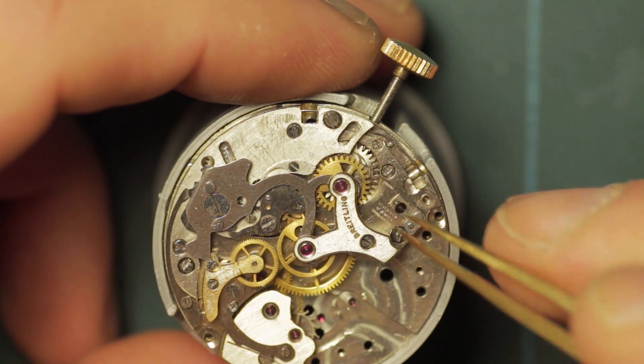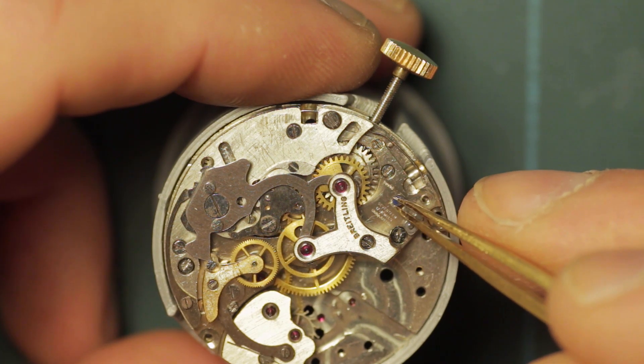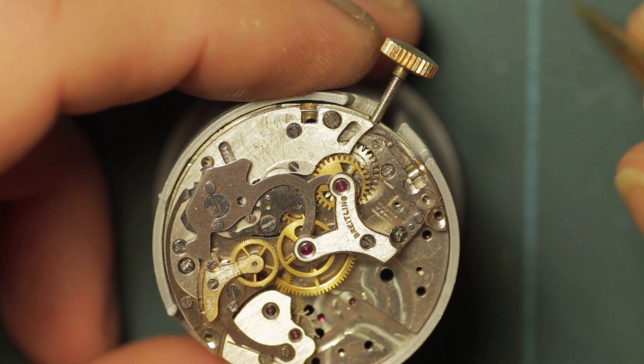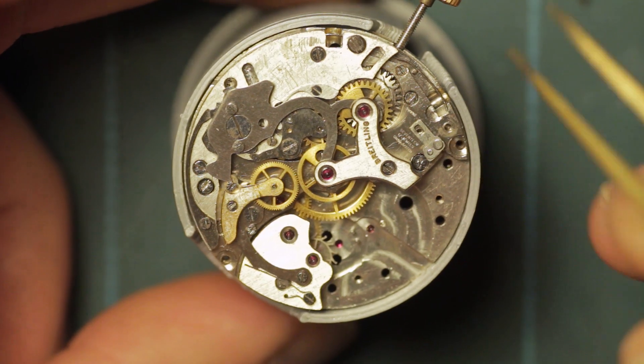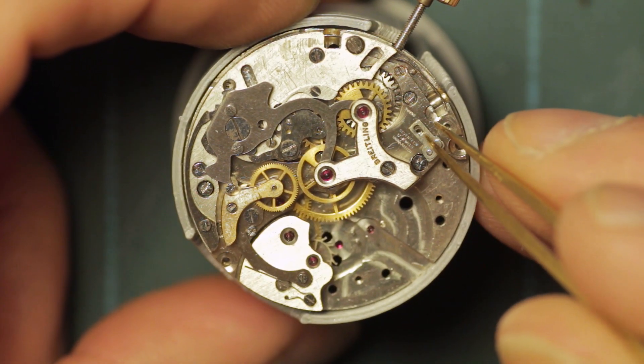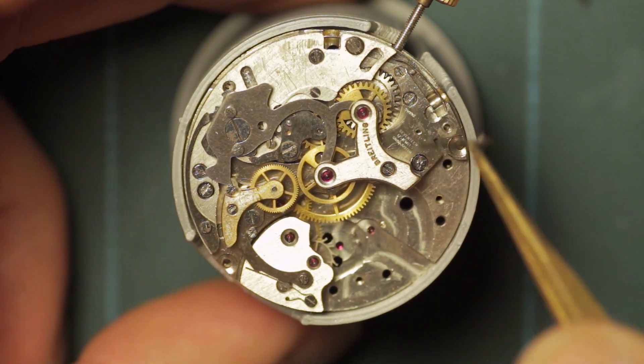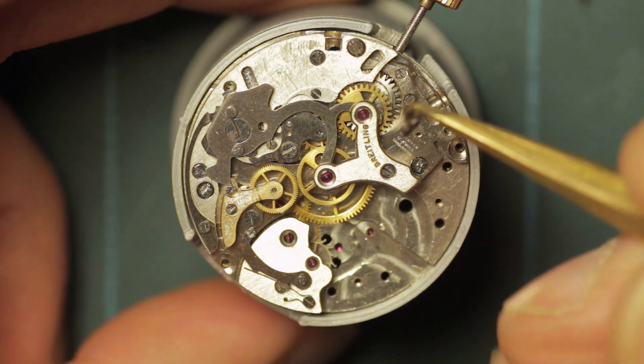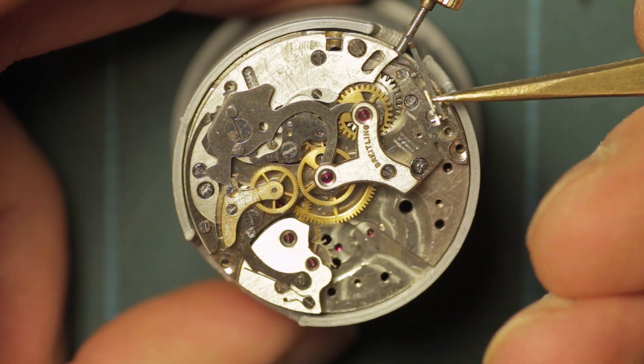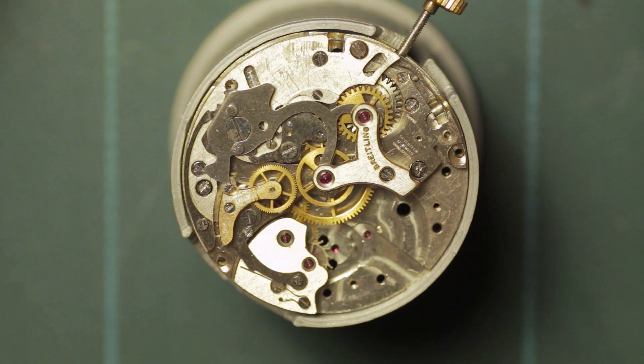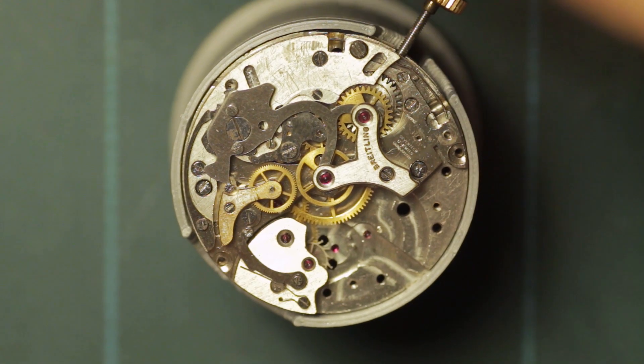The next item to be removed for safekeeping is the minute jumper spring. These can be quite fragile, especially the ones on the Landeron - if you'll remember from the 48 service, that one was badly bent and had to be replaced. These are a little bit sturdier, they're more of a spring steel, but still quite fragile, so it's important to get them out of the way.